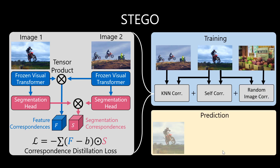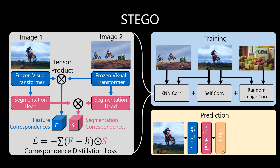At inference time, we take an image, pass it through the visual transformer and the segmentation head, cluster the resulting segmentation embeddings, and refine these clusters with a conditional random field.